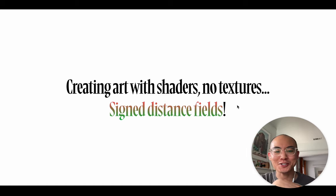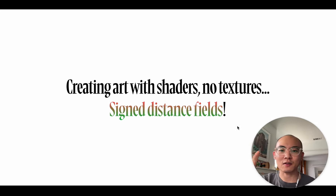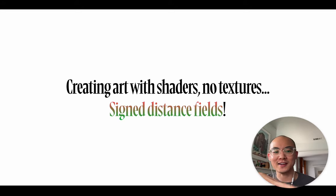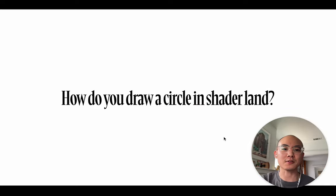Something I haven't explored much myself but you'll hear about in the 3D space is signed distance fields — the idea of creating art with just shaders, just math, no textures loaded in. Everything is generated on the fly from scratch in shader land. It's the most wild stuff. Here's a simple example: how do you draw a circle in shader land?